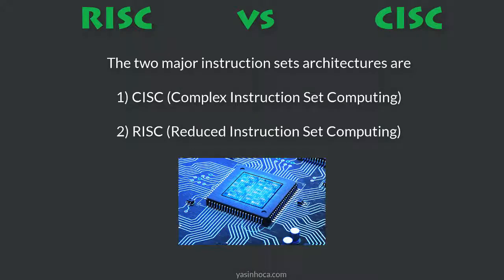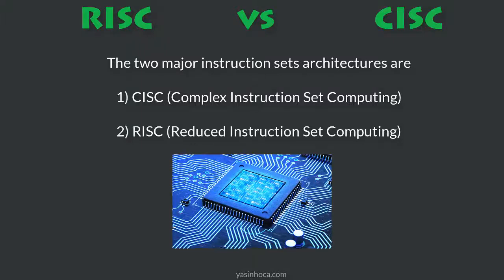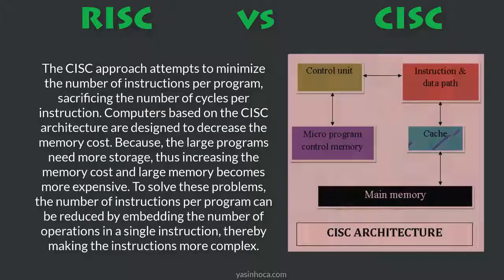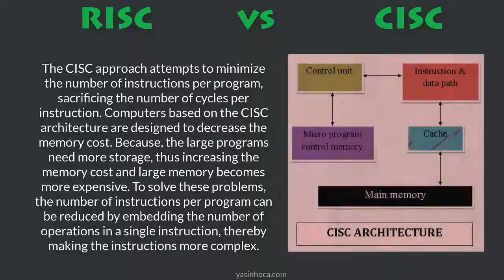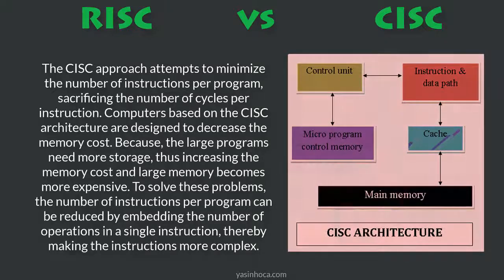The two major instruction set architectures are Complex Instruction Set Computing (CISC) and Reduced Instruction Set Computing (RISC). The CISC approach attempts to minimize the number of instructions per program, sacrificing the number of cycles per instruction. Computers based on CISC architecture are designed to decrease the memory cost, because large programs need more storage, increasing memory cost. To solve these problems, the number of instructions per program can be reduced by embedding multiple operations in a single instruction, thereby making the instructions more complex.